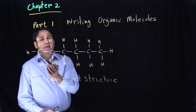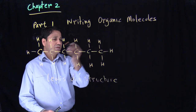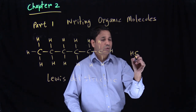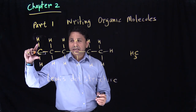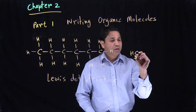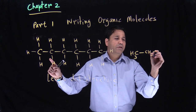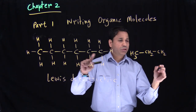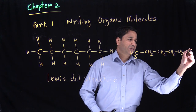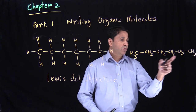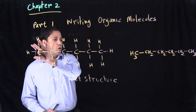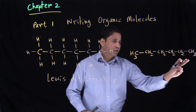Now the problem here is it takes a long time to write all these different carbons with all these hydrogens. Another way to write it would be to simply write down each carbon as a group. So this carbon has CH3 as a group on it, so we write down CH3, then CH2, then CH2, then CH2, CH2, and a CH3. So we can divide it like this: CH3, one carbon at a time — CH2, CH2, CH2, CH2, and CH3.